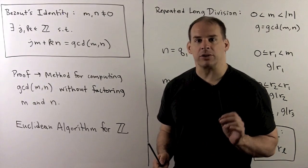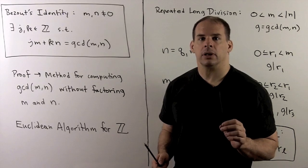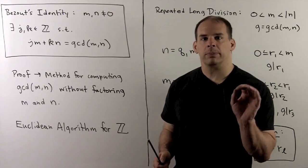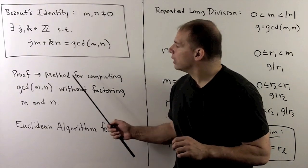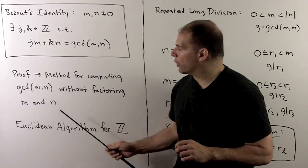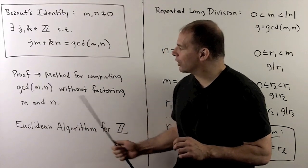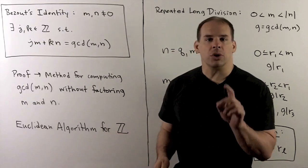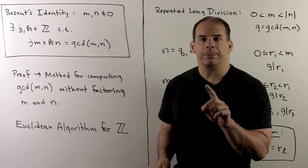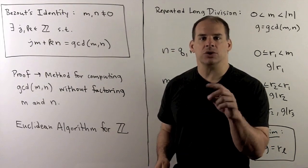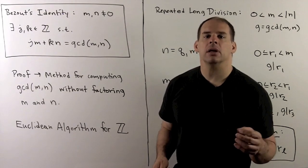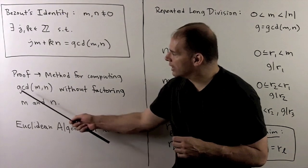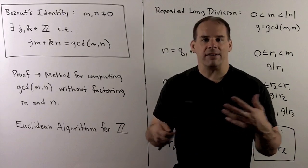So for that, we have to go back to the proof. Buried in the proof that we used, we'll have a method for computing the greatest common divisor of m and n without factoring m and n. So if m and n are very large numbers, we may not have access to a large list of primes. This is a way to get greatest common divisor without having that list.